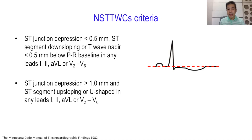If you see these changes in leads other than 1, 2, AVL, V2, or V6 — for example AVR, AVF, lead 3, or V1 — then they are part of the normal variant and not labeled as nonspecific ST-T wave change.